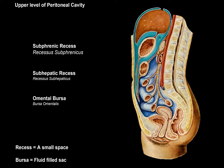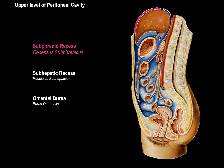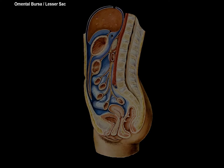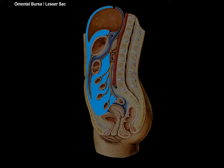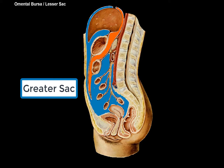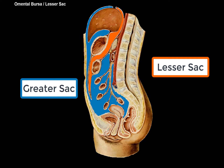The upper level has two recesses and one bursa. A recess is a small space between two structures, and a bursa is a sac. The subphrenic recess is the space below the diaphragm, highlighted here. Then there's the subhepatic recess, which is under the liver. Then we have the omental bursa — also called the lesser sac — a separate space containing serous fluid. With one pen stroke you can draw across the entire cavity, but you can never reach the space underneath the stomach without lifting your pen. All of that blue area is the greater sac, and the orange area is the lesser sac, or omental bursa.